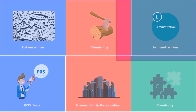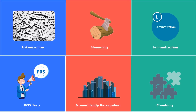Natural language processing refers to an AI method of communicating with intelligent systems using a natural language. Here are the different steps involved in the process of NLP: tokenization, stemming, lemmatization, POS tags, named entity recognition, and chunking.